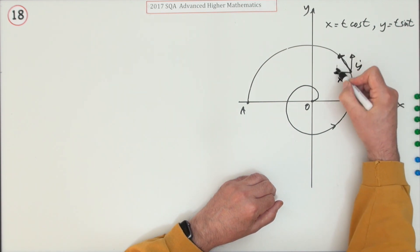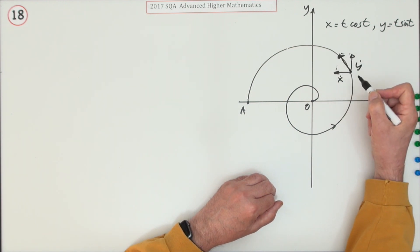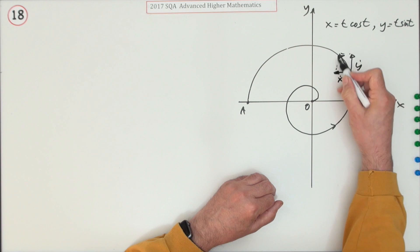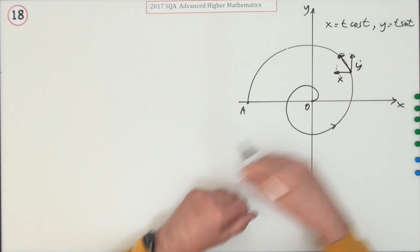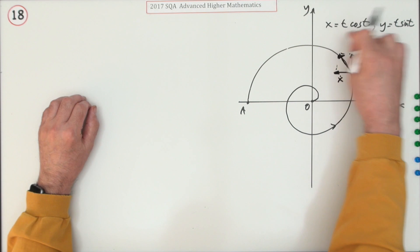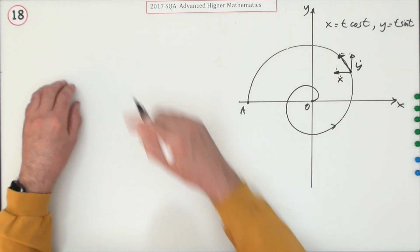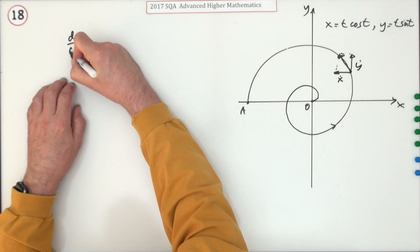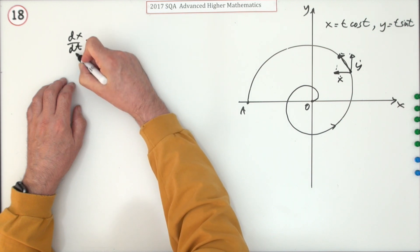The resultant speed along the path is just the vector produced by those two components. The magnitude of that vector will just be given by Pythagoras, and that's all they want. So the first part would be differentiate them with respect to time. So dx/dt, or you could write x dot.